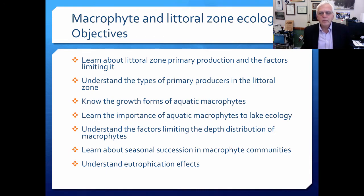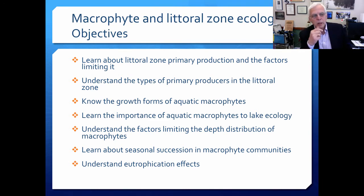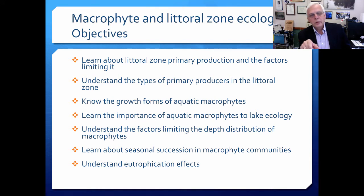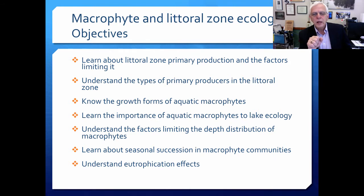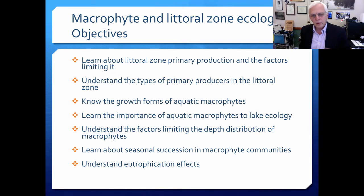So, the objectives for this session: I'd like you to learn about littoral zone primary production and the factors limiting it. What you're going to learn is that the littoral zones of the world — including things like wetlands and coastal zones — are the most productive environments on the planet. I'd like you to understand the types of primary producers found in the littoral zone. We'll walk through those, although we've already talked about algae, cyanobacteria, plankton, and things like epipelic, epiphytic, epilithic, and epilignic primary producers.